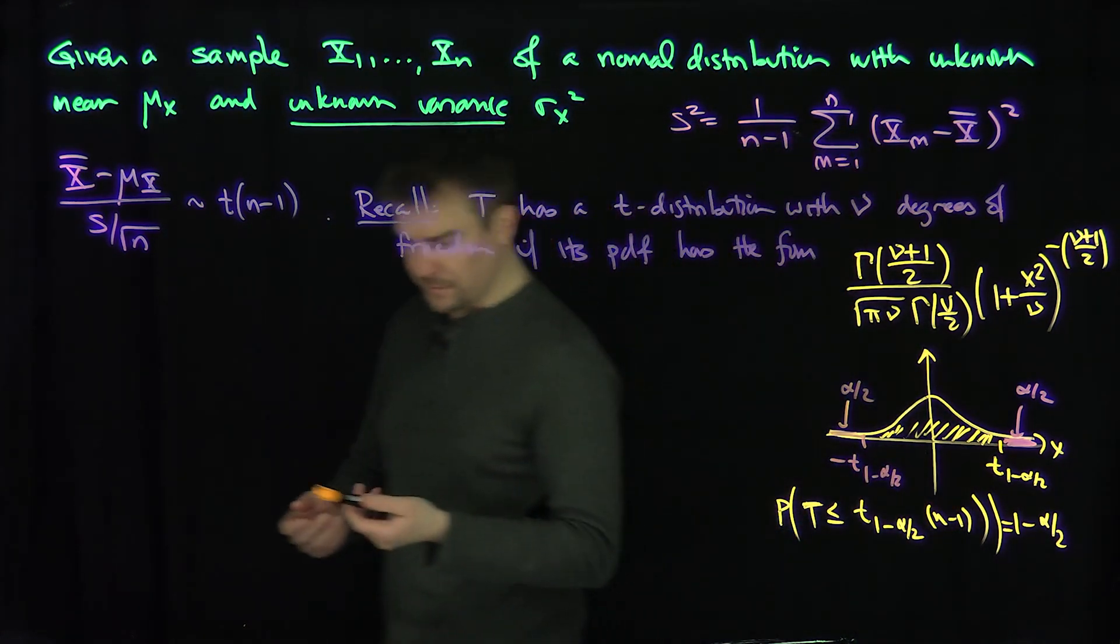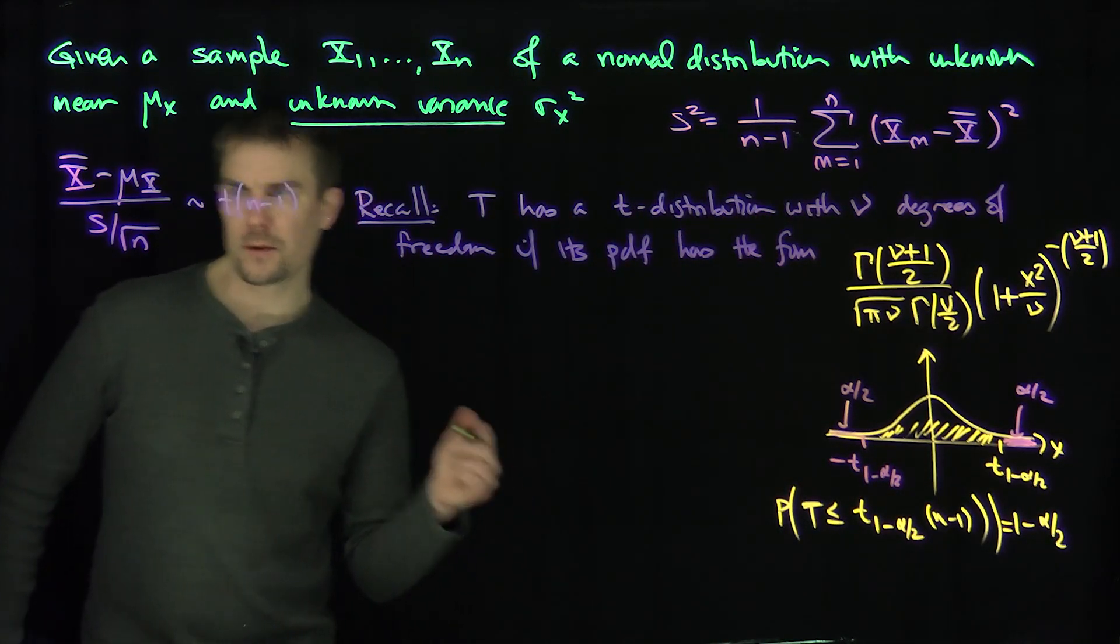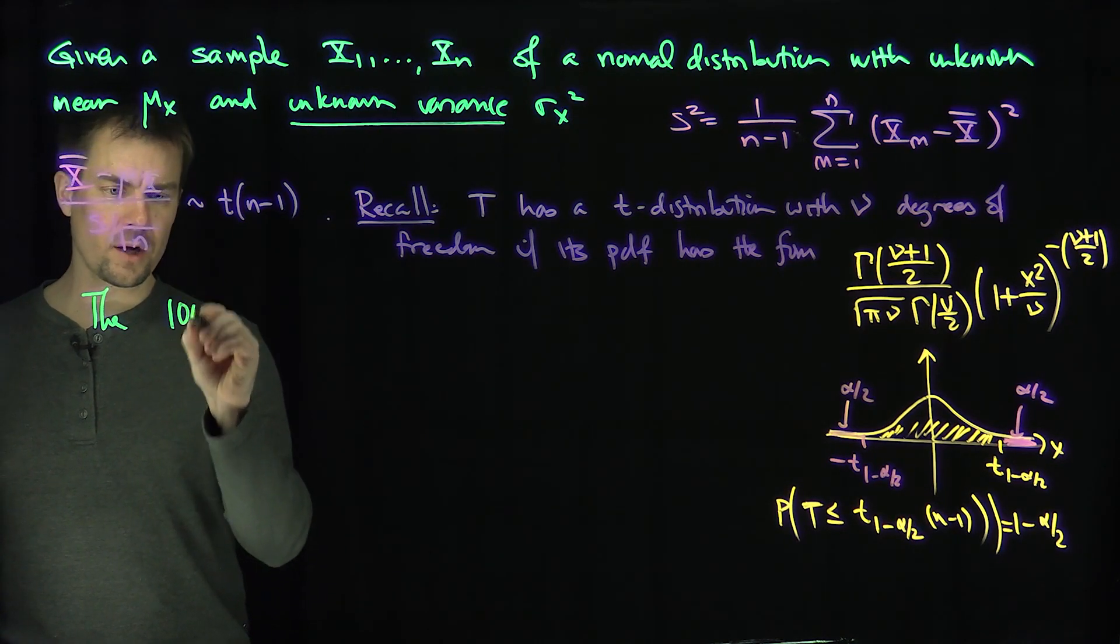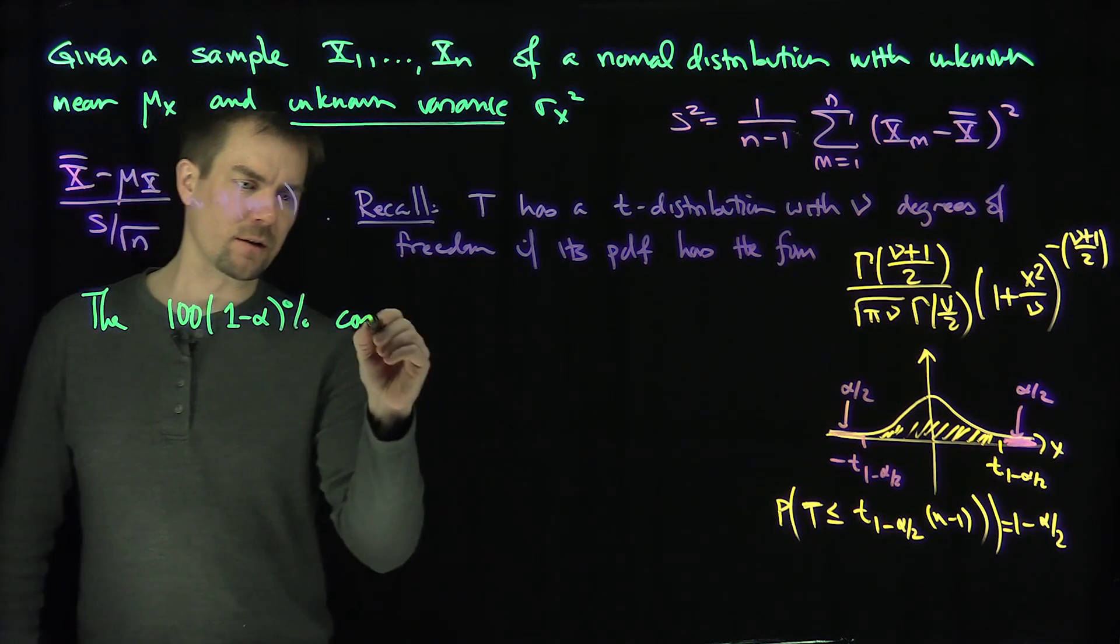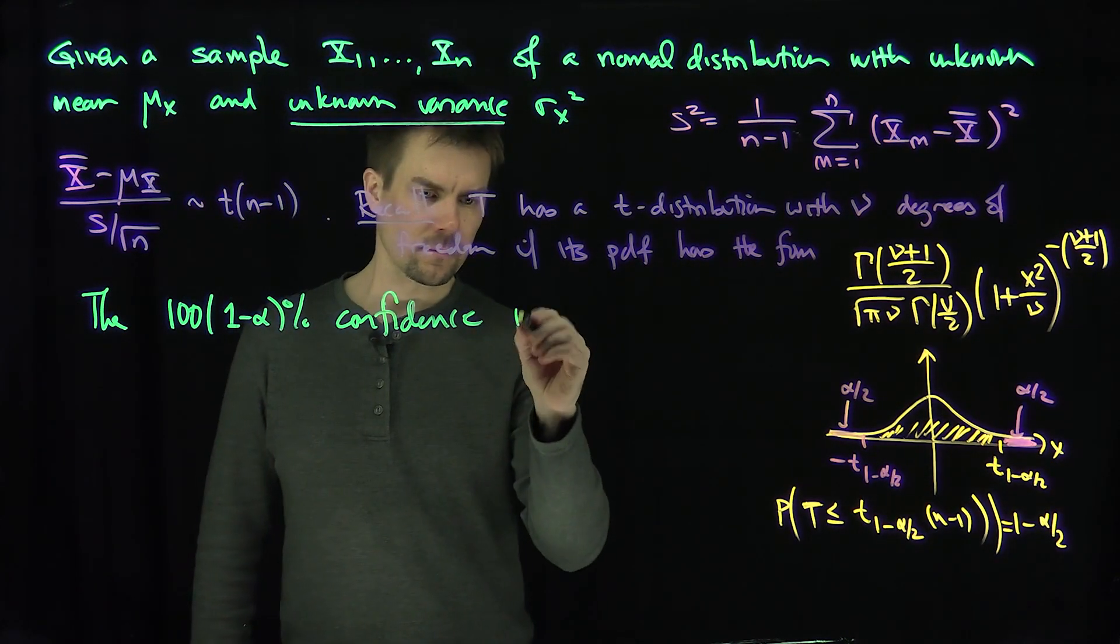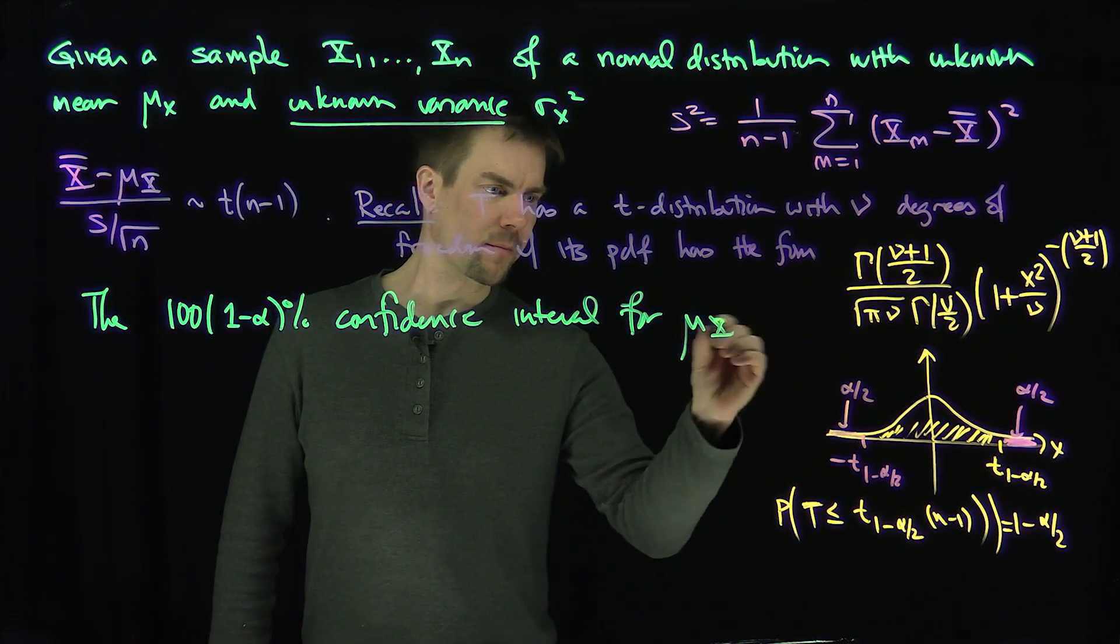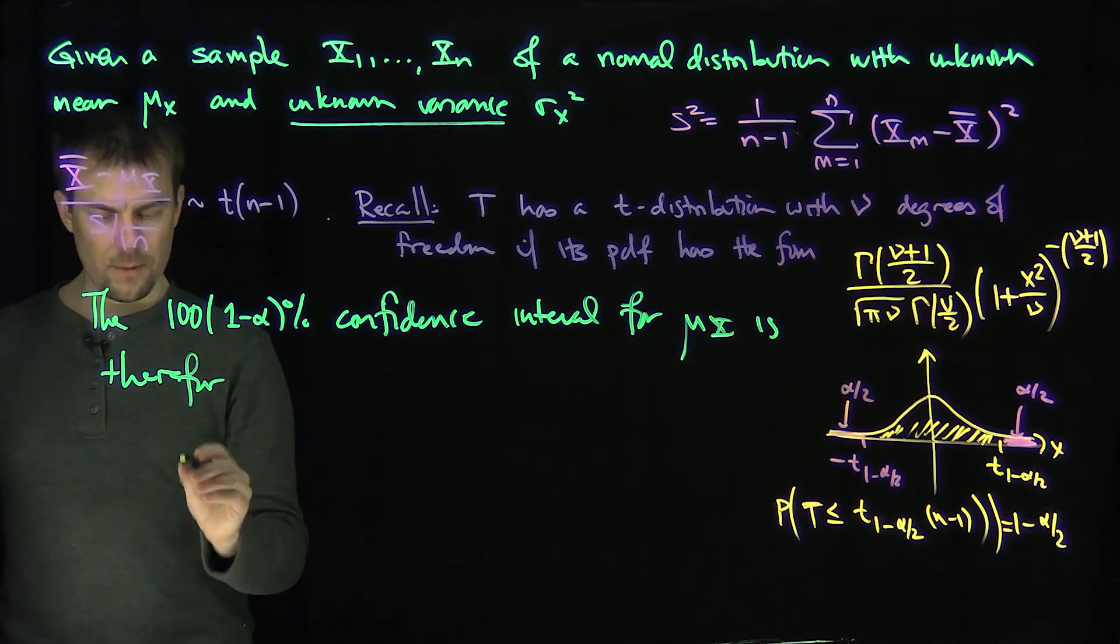So now we're going to form our test statistic. So how are we going to do that? So now let's form. Therefore, the 100 times 1 minus alpha percent confidence interval for mu x is therefore...